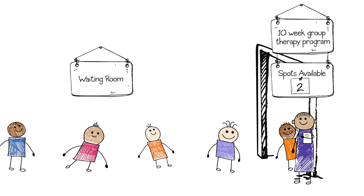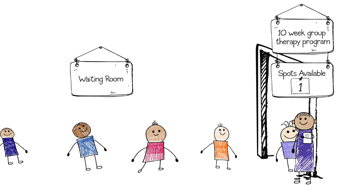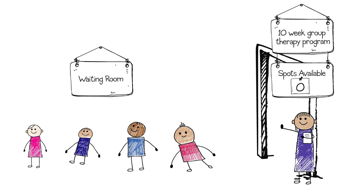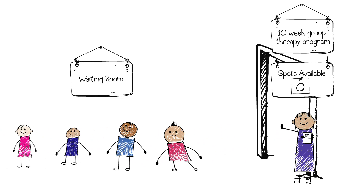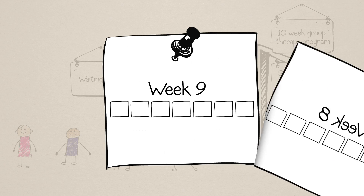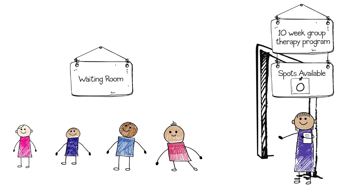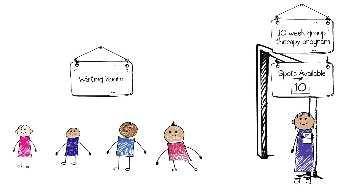When the first therapy groups fill up, the next teenagers that come along are placed on a waitlist, and their outcomes are watched and compared with outcomes among teenagers that receive the new group therapy model. As new therapy groups open up, the teenagers on the waitlist are reassigned to the experimental group on a rolling basis and offered the intervention.